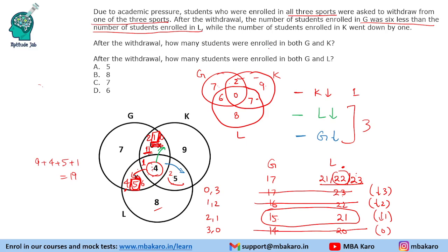After the withdrawal, how many students were enrolled in both G and K? So both G and K, we have 2 students enrolled. How many students were enrolled in both G and L? So we have 6 students enrolled in both G and L. So this was the solution to the set.